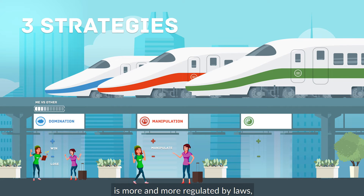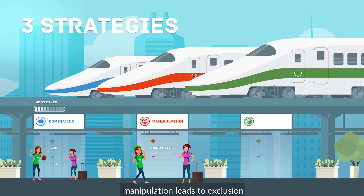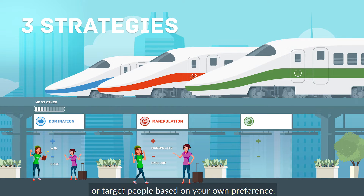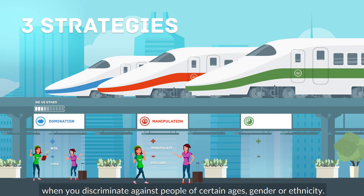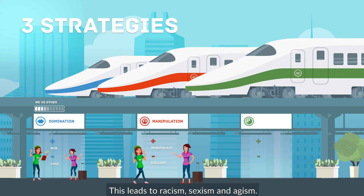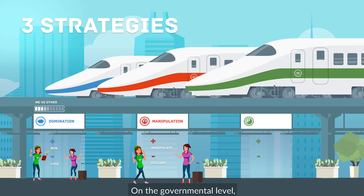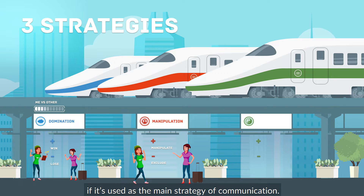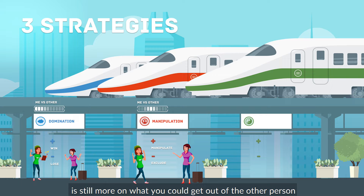The first strategy of domination is more and more regulated by laws, but manipulation is more difficult to control by our society. On the individual level, manipulation leads to exclusion — for example, when you start to favor or target people based on your own preference, like only hiring people you know, or discriminating against people of certain ages, gender, or ethnicity. This leads to racism, sexism, and ageism in the worst cases. It feels good as long as you are in the right group. On the governmental level, manipulation quickly scales up to become corruption if used as the main strategy of communication. On the scale of me versus other, manipulation is in the middle, but the focus is still more on what you could get out of the other person rather than on their interests.